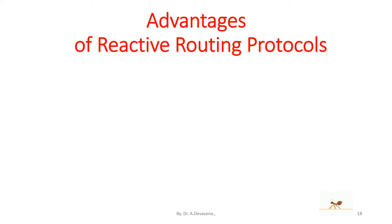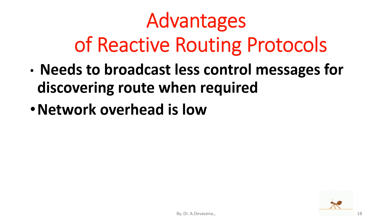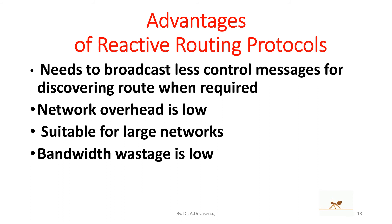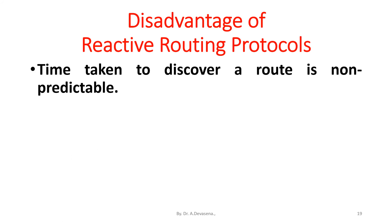Advantages of reactive routing protocols: first, it needs to broadcast fewer control messages for discovering a route when required; second, the network overhead is low; third, it is suitable for large networks; fourth, bandwidth wastage is low. Disadvantage: the time taken to discover a route is non-predictable, and it may take a longer time if the proper route is not available.